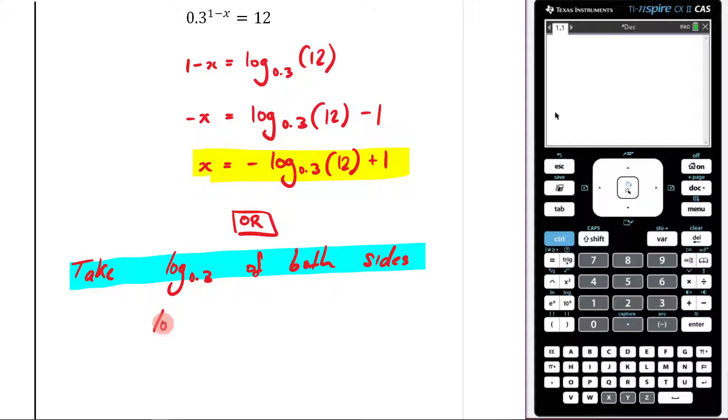So this is going to be log base 0.3 of 0.3 to the power of 1 minus x equals log base 0.3 of 12.